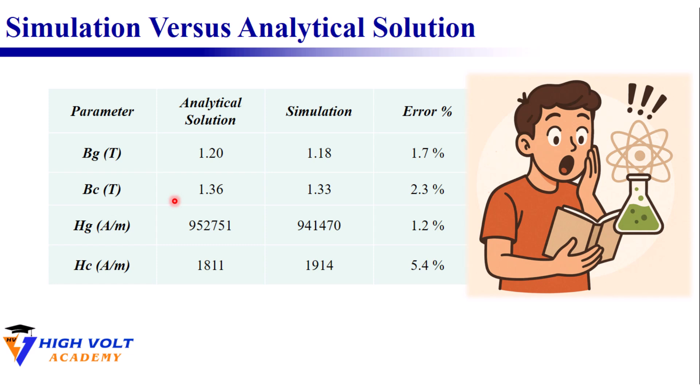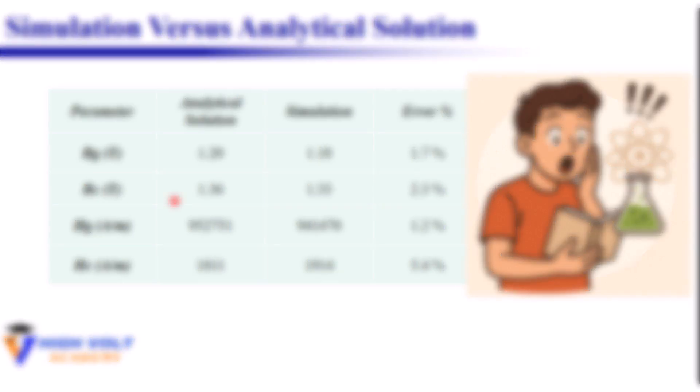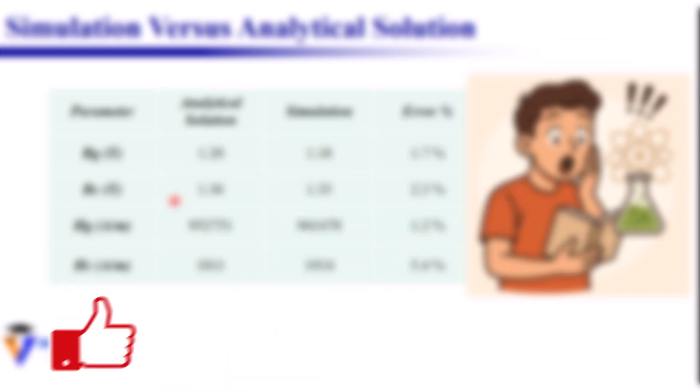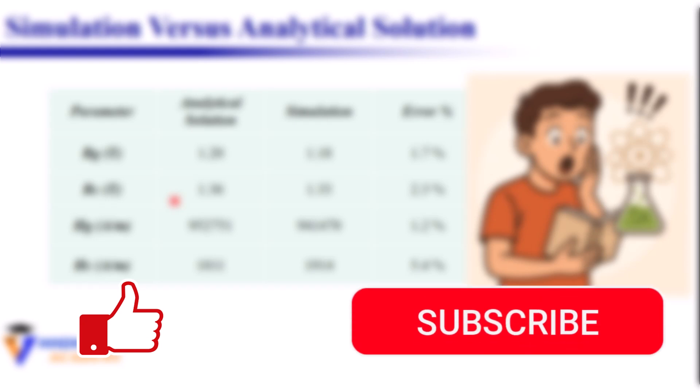That's powerful. It shows that the classical analytical method still provides an excellent first-order estimate for magnetic circuits, and COMSOL validates it beautifully. In our next session here on High Volt Academy we'll move one step further and simulate a single-phase transformer with a non-linear core, running it in a time-dependent mode to observe actual transformation effect. If this tutorial helped you please give it a thumbs up and subscribe.